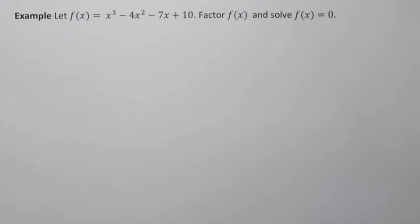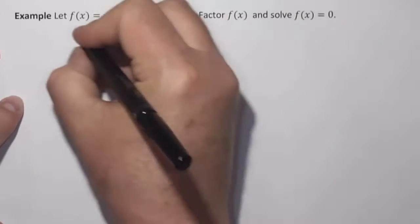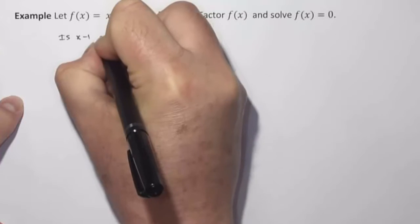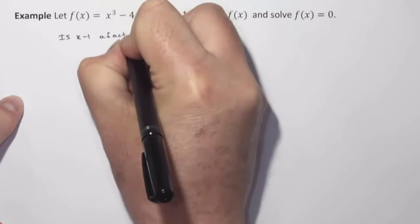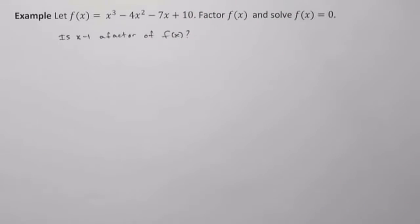Now, so what we have to do is just kind of take a guess. What might be a zero of this function? So just pick a number and guess. I'm going to try to pick an easy number. Let's pick one. So I'm going to check to see, is x minus 1 a factor of f of x? Why one? I just picked it. So x minus 1, I'm just picking that to check to see. So I'm basically just taking a guess.